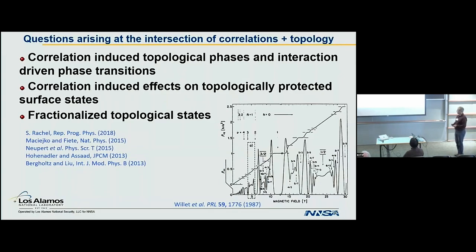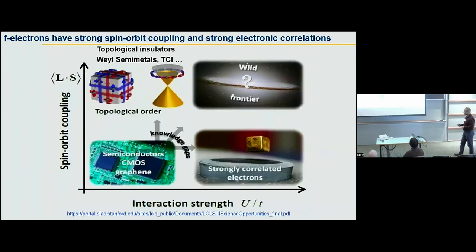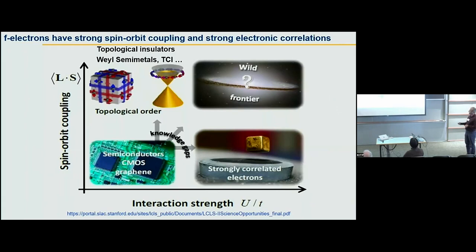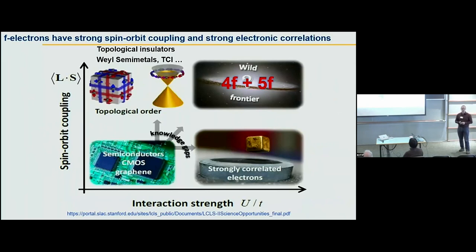We've heard various efforts towards that direction. This is a version of a graph shown earlier in the week. Even though Charlie nicely showed us there are still interesting questions with regards to topology, we are motivated by the fact that if we can crank up the strength of the spin-orbit coupling and the strength of interactions, perhaps we'll get this interplay between strong correlations and topology. We argue that 4f and 5f materials are very natural places to look, precisely because they sit at the bottom of the periodic table with strong spin-orbit coupling and strong Coulomb interactions from the spatially constrained f orbitals.